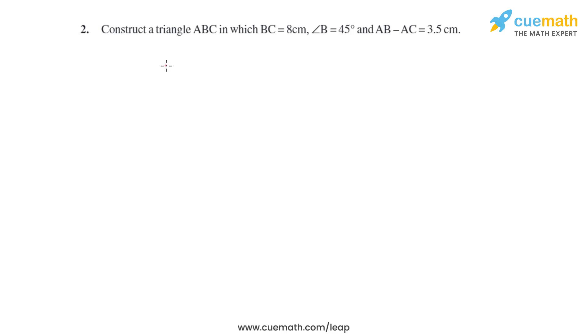Question 2 of this exercise says construct a triangle ABC in which BC equals 8 centimeters, angle B equals 45 degrees, and AB minus AC equals 3.5 centimeters. Let's start with the steps of construction. The first step says draw...